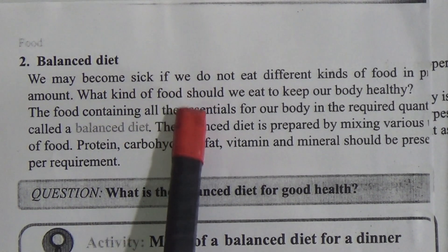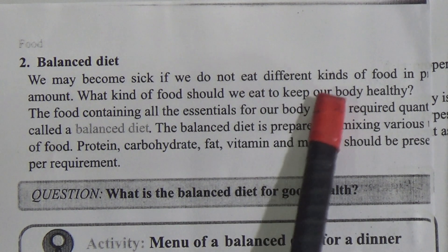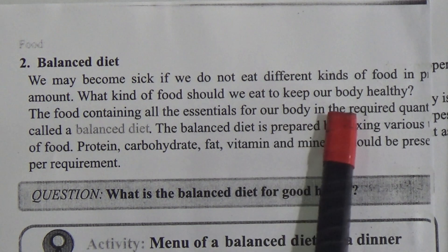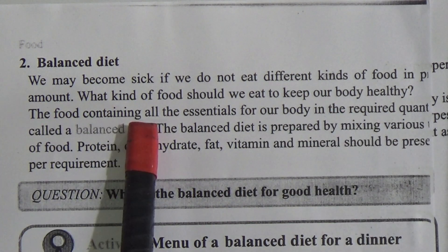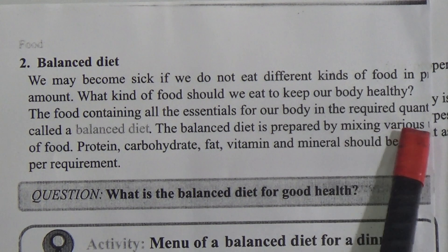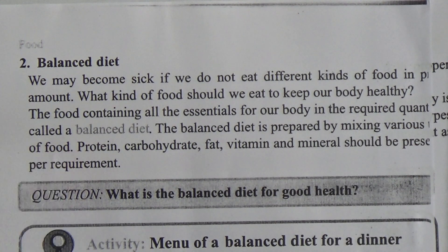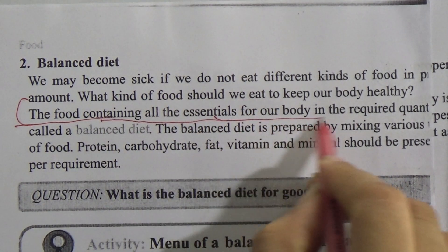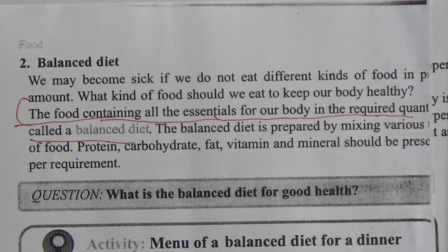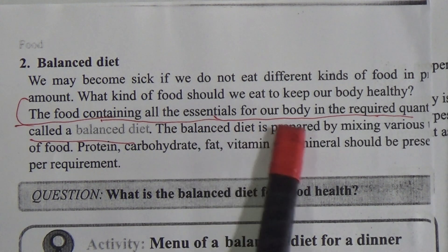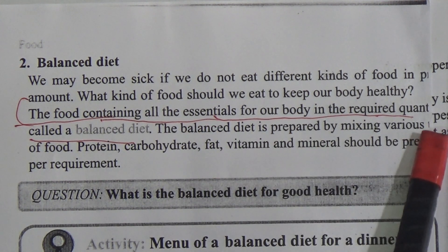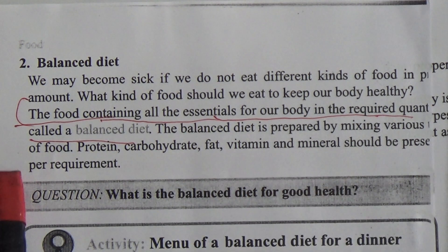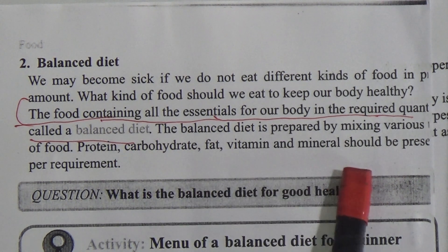We may become sick if we do not eat different kinds of food in the proper amount. The food containing all the essentials for our body in the required quantity is called a balanced diet. This is a very important question-answer — memorize it properly. The balanced diet is prepared by mixing various kinds of food: protein, carbohydrate, fat, vitamins, and minerals should be present as per requirement.